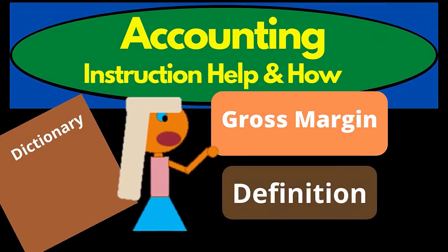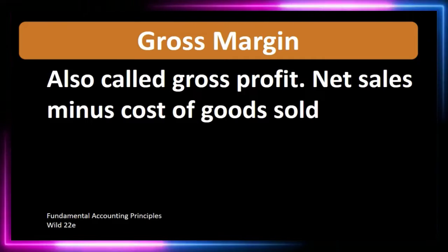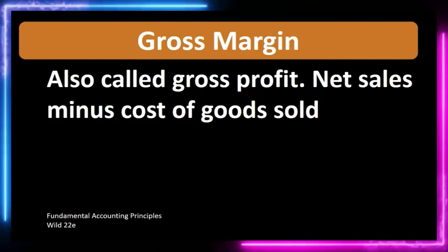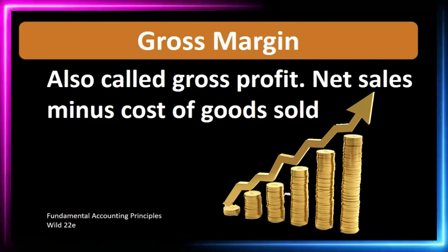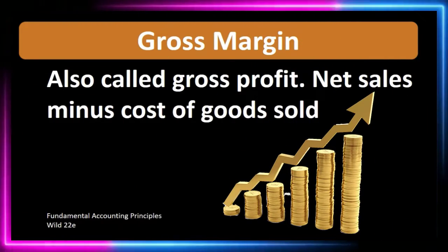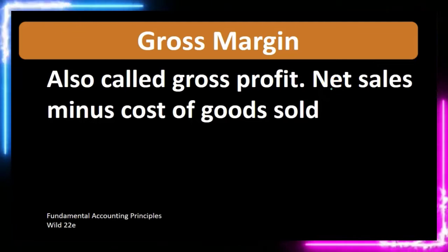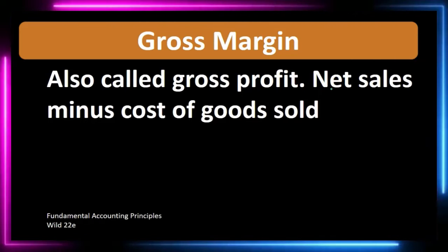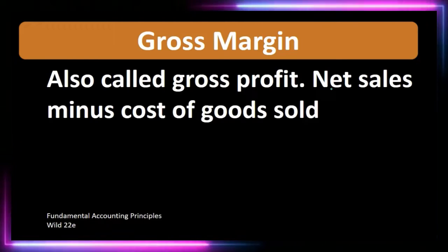In this lecture we're going to define gross margin according to fundamental accounting principles, Wild 22nd edition. Gross margin is also called gross profit, and is defined as net sales minus cost of goods sold. Net sales — not net income — is sales minus the contra sales accounts, which are returns and allowances.